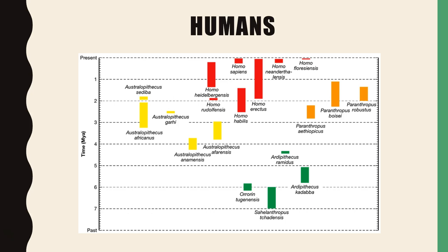Then we had the genus Paranthropus, and now we have the Homo genus — these are the ones most closely related to humans. As you can see, Homo sapiens is here. The key ones are Homo erectus, Homo neanderthals, and Homo habilis. They're key in the hominin story, but there are other features of these particular species that are also important.